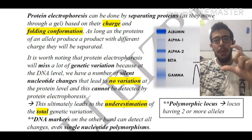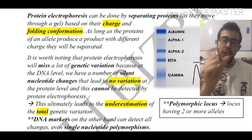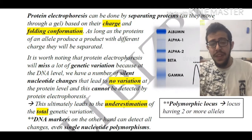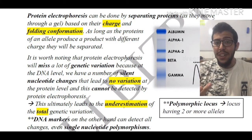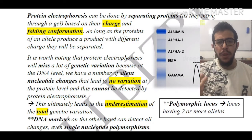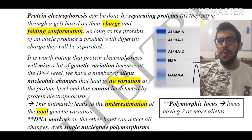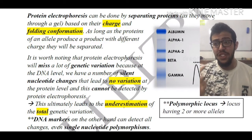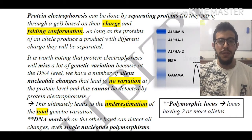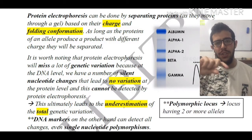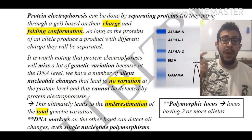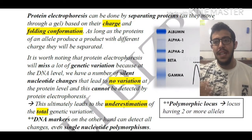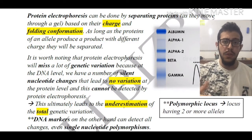A difference in charge will cause a protein to migrate to a location different from the primary protein. However, it is worth noting that protein electrophoresis will miss a lot of genetic variation, because at the DNA level there are silent nucleotide changes that lead to no variation at the protein level. A mutation, when translated to an amino acid, may produce no change in the amino acid — it is called silent — and this cannot be detected by protein electrophoresis since the proteins are the same in both cases.